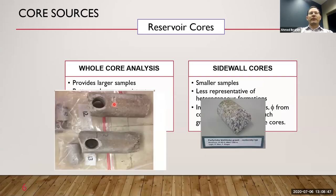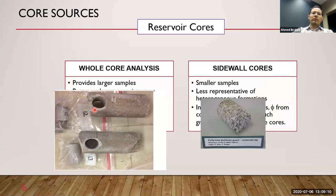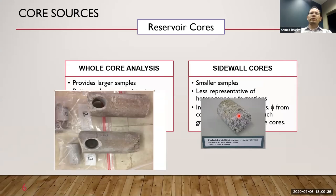This picture shows an example of whole core and sidewall cores. The whole core is seven inches in diameter. We can drill small cores from it at surface using a special drill bit — horizontal permeability if drilled along the core, and vertical permeability if drilled perpendicular to the core length. For sidewall cores, being small blocks, permeability measurement gives only horizontal permeability; we cannot get vertical permeability.